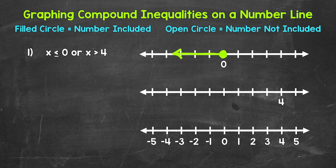Next, we have x is greater than four. So we need an open circle at four — four is not included — and then an arrow going right, representing everything greater than four. And that's x is greater than four.